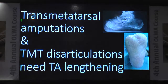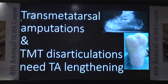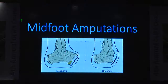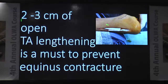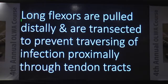Trans-metatarsal amputations and TMT disarticulations always require lengthening of the tendo Achilles; otherwise the patient will develop a contracture in plantar flexion deformity. For midfoot amputation — Lisfranc and Chopart — two to three centimeters of open tendo Achilles lengthening is a must to prevent equinus contracture. Long flexors are pulled distally and transected so that infection does not traverse up through the tendon sheath.